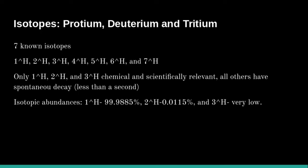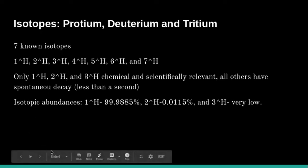The isotopic abundances: protium is found in nature in considerable amounts, 99.9 percent, while deuterium is 0.0115 percent. Deuterium is also found in nature in very small, minute quantities. Whereas tritium is not readily found. It's found but in very low, undetectable levels.